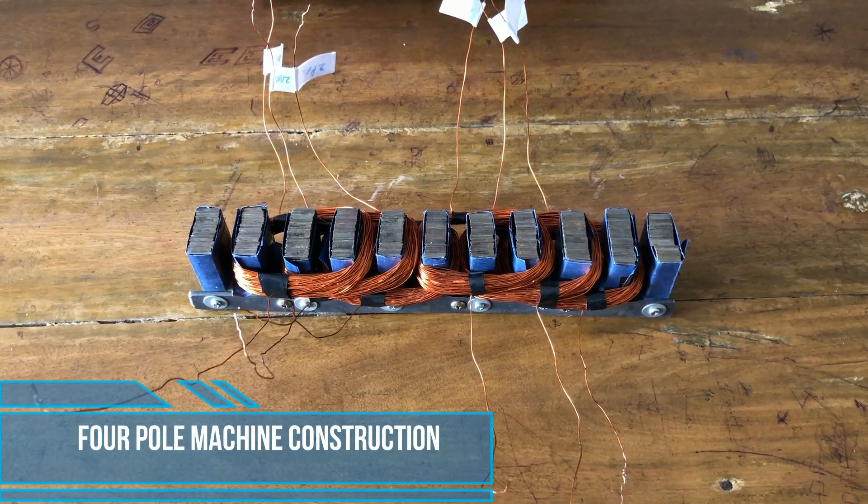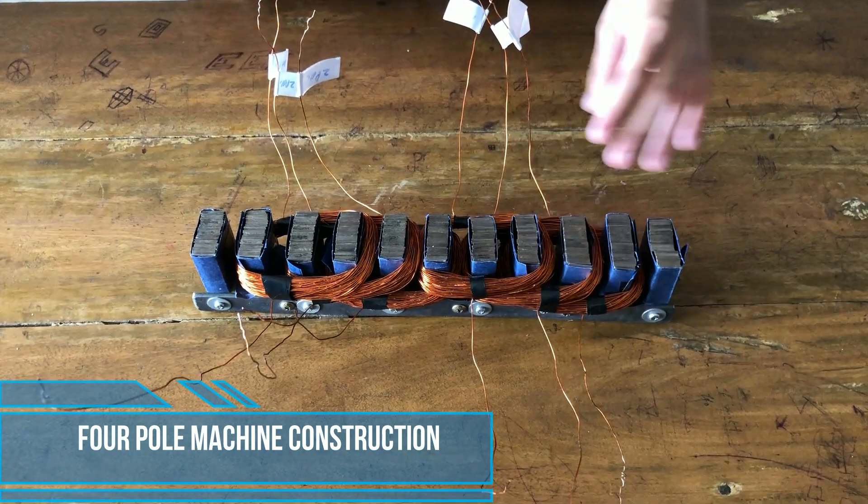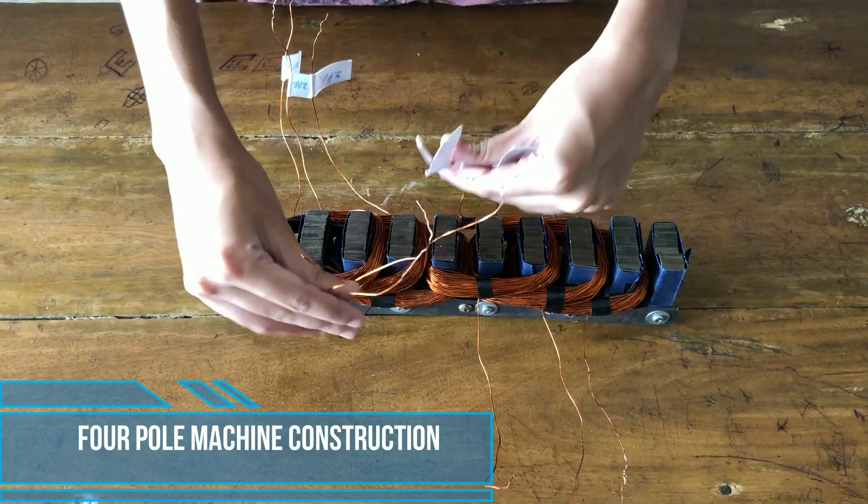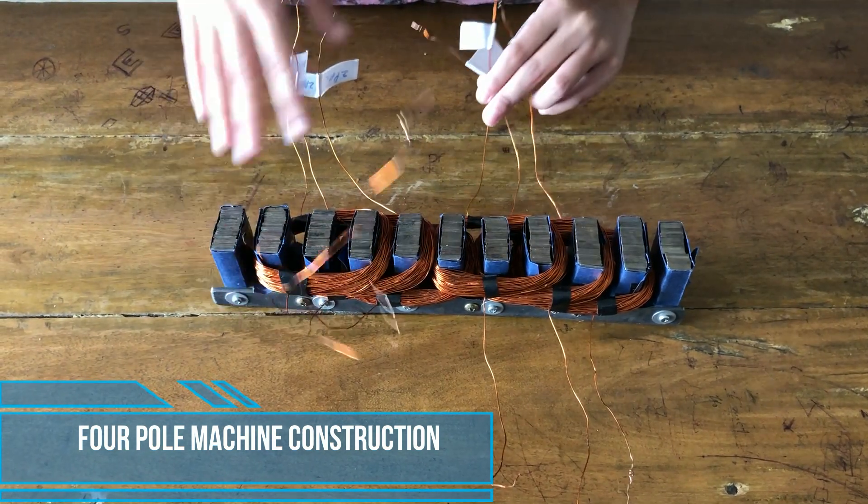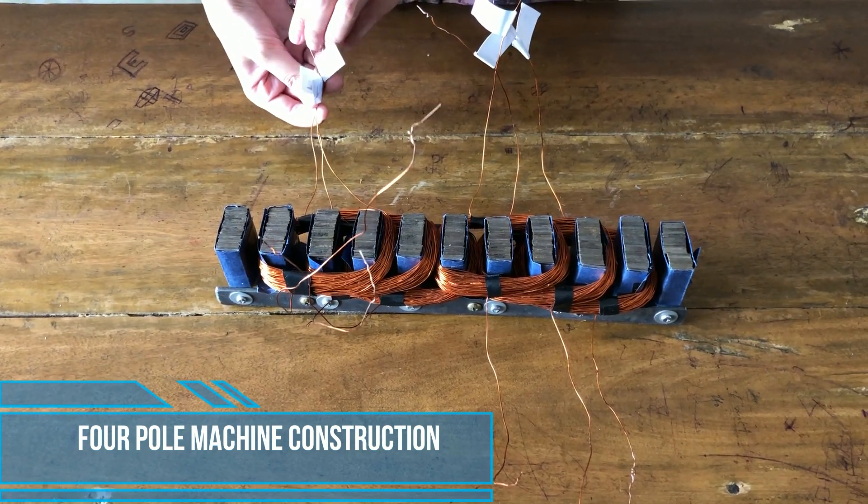Now, we shall proceed to the four-pole configuration. The input terminal will be as it was in two-pole. However, the output terminal will be connected with this terminal of coil 2 instead of this one, and this terminal will be shorted together and will act as a neutral point here.